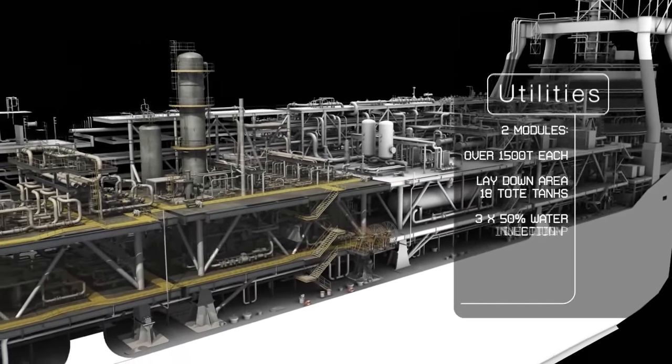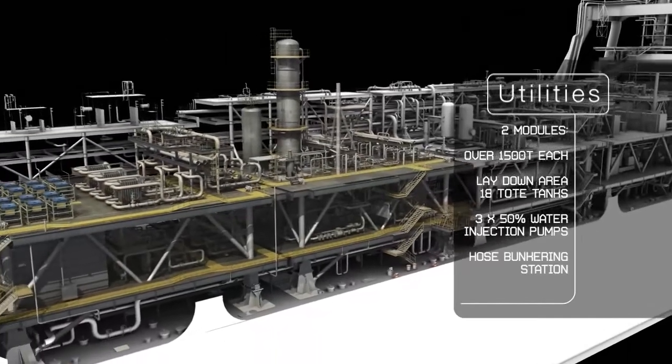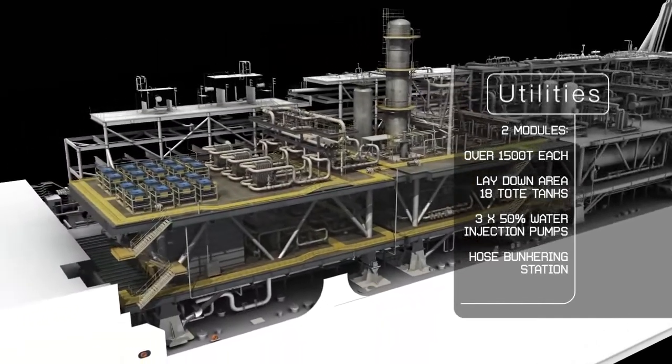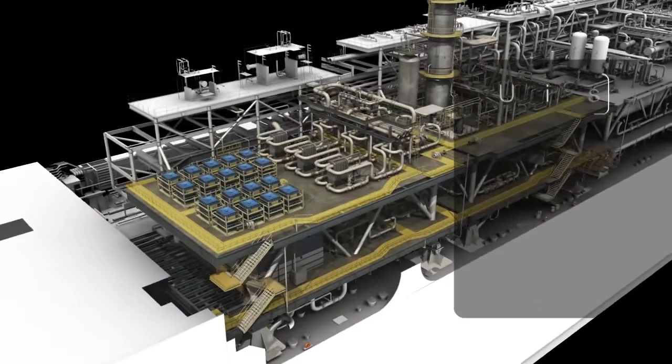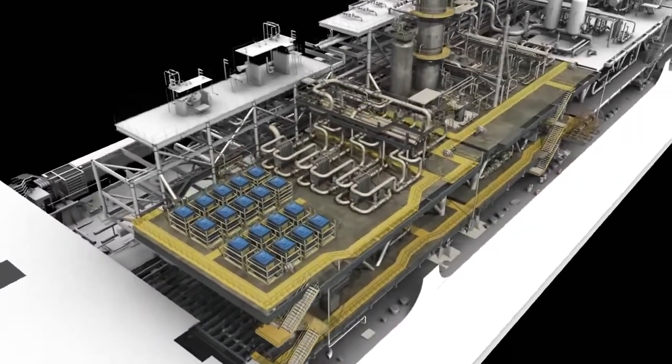The two utilities modules contain the water injection pumps amongst a range of other utility equipment. These modules also provide the lay-down area for 18 chemical tote tanks.